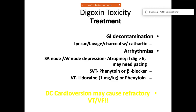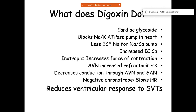For ventricular tachycardia from digoxin toxicity, lidocaine at 1 mg/kg or adenosine can be considered. Importantly, do not perform DC cardioversion in a patient with digoxin toxicity, as it may cause refractory ventricular tachycardia or ventricular fibrillation — a very dangerous situation.